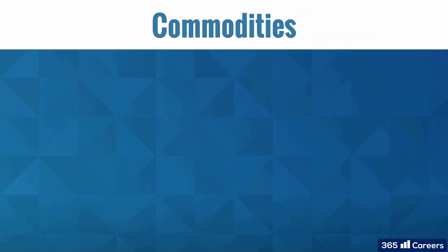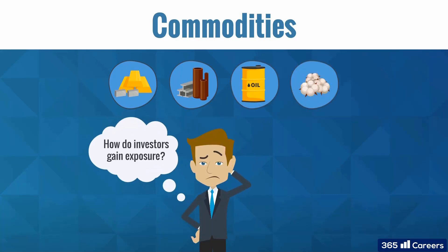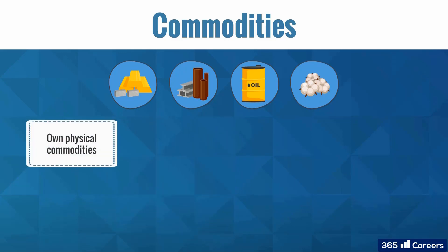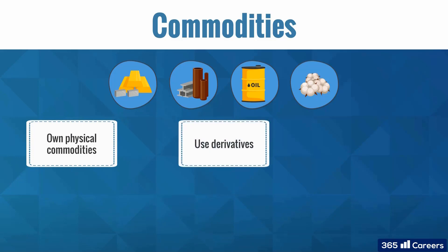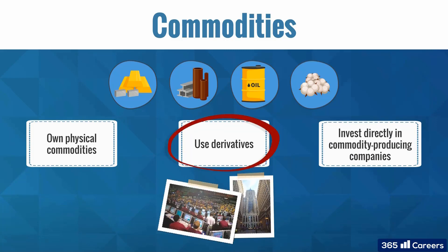The next group of alternative investments is commodities. It includes several subcategories like precious metals, base metals, and energy and agricultural commodities. Investors can gain exposure simply by owning physical commodities like metals, oil, or grain. Alternatively, they can use derivatives like futures or funds tracking commodity indexes. Another option is to invest in the equity of commodity-producing companies. The most common approach, though, is through futures or index funds.